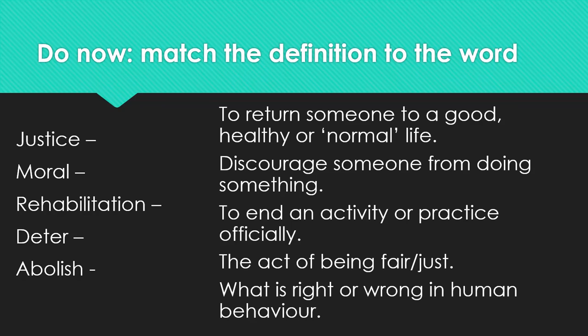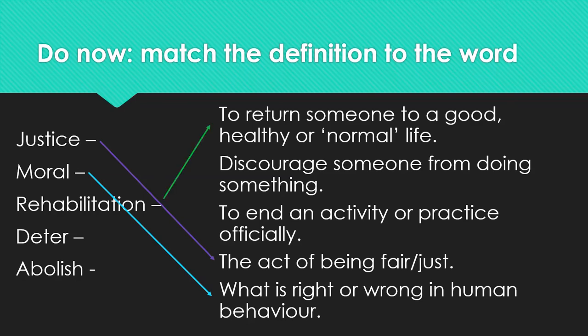The definition of the word justice is the act of being fair and just. The definition of moral is what is right or wrong in human behavior. The definition of rehabilitation is to return someone to a good, healthy or normal life. The definition of deter is to discourage someone from doing something. And the definition of abolish is to end an activity or practice officially.